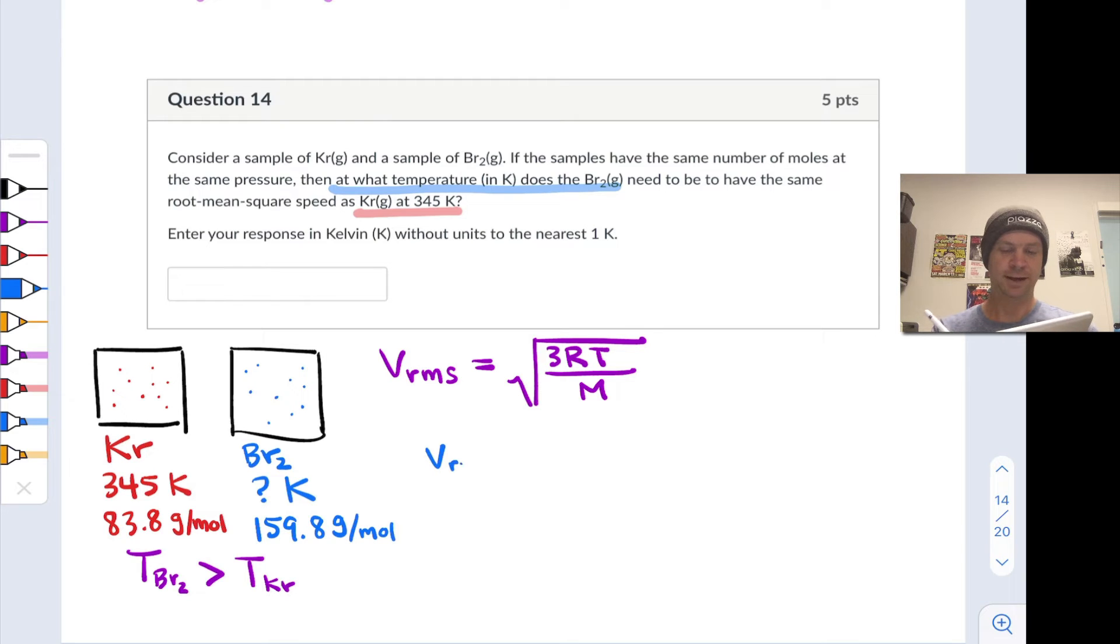And we can proceed with solving the problem mathematically by essentially setting the two root mean square speeds equal to each other. And I'm going to start by doing that in a very simple way by saying vRMS for Br2 is equal to vRMS for the krypton. And what I'm going to do now is just replace each vRMS term with its respective square root of 3RT over M expression, but recognizing that I can actually divide out 3R on both sides of this ensuing equation because 3 and R are constants.